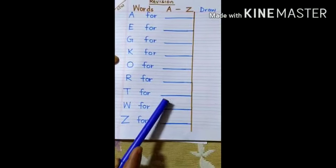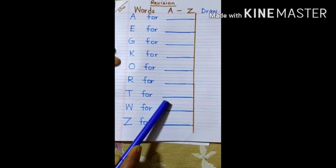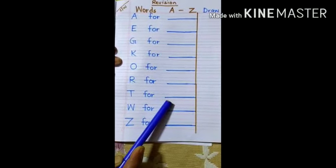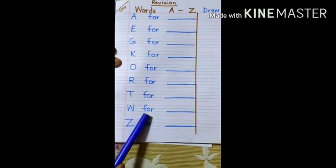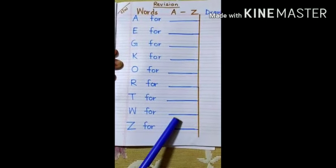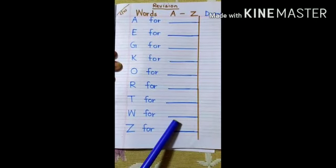T for tree. T R E E, tree. W for watch. W A T C H, watch.